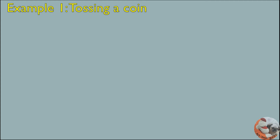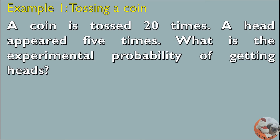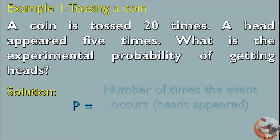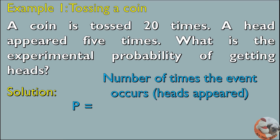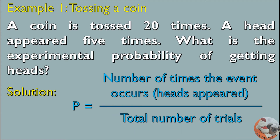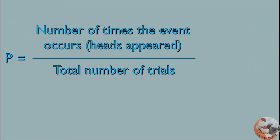Example 1: Tossing a Coin. A coin is tossed 20 times. A head appeared 5 times. What is the experimental probability of getting heads? Solution: P (probability) is equal to the number of times the event occurs (heads appeared) divided by the total number of trials. What will be the probability? 5 is the number of times the head appeared, divided by 20, which is the total number of trials.